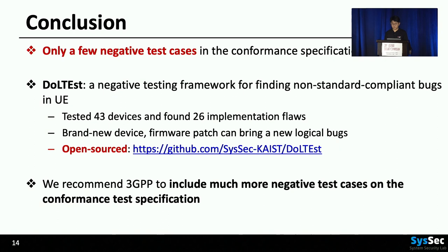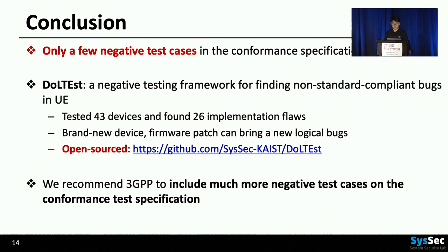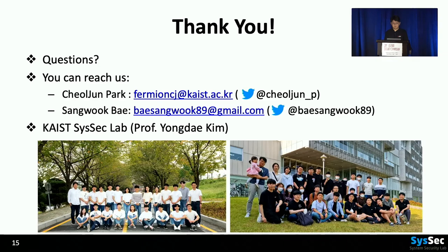So, we have shown that there are only a few negative test cases in the conformance specification to test the UE. We implemented DoleTest, a negative testing framework, and found 26 implementation flaws from 43 test devices. We also found that new products or even firmware patching can bring new bugs. Thus, we believe that frequent negative testing is required to check for logical bugs. We also recommend 3GPP to include many more negative test cases in the conformance specification. Thank you for listening.